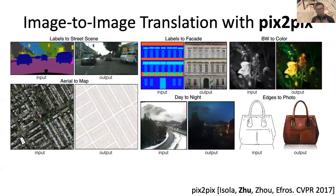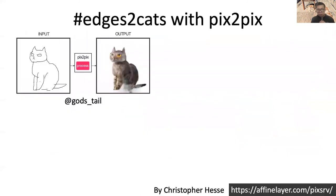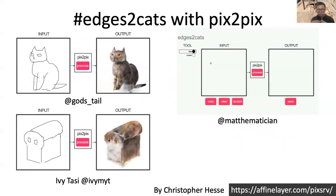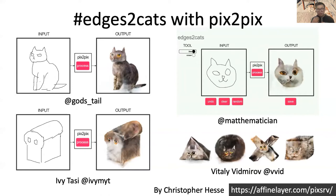A recent example is Pix2Pix, in which we use the idea of conditional GANs to translate an image from one domain into another. During training, the model takes thousands or millions of input-output pairs and learns this mapping. At test time, it can produce realistic content given test images. Our friend Chris developed an online interface called Edge2Cats based on Pix2Pix. You sketch a cat, press a button, and you get the results — quite easy. Here are some more creative cats created by our users.